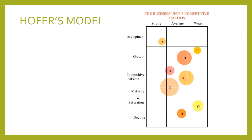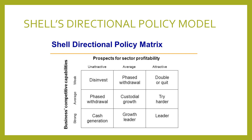The rest of the things are quite self-explanatory and can be studied through text. The next is Shell Directional Policy Model. This model is developed by Shell Chemicals, a UK based firm. It is another portfolio model that helps companies in identifying a balanced business portfolio. The model is positioned in a three cross three matrix with a total of nine cells. The vertical axis represents the company's competitive capabilities graded as weak, average and strong. The horizontal axis represents the business sector prospects of profitability categorized as unattractive, average and attractive.